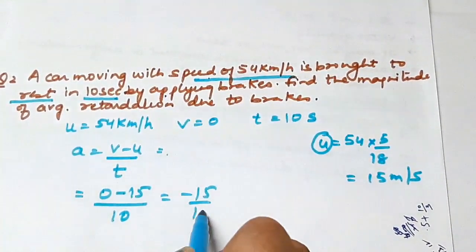Acceleration is v minus u upon t. Here we can see initial velocity is more and final velocity is zero, so acceleration will be negative because this is retardation. Because time is in seconds, we should convert to meter per second or convert time to hours so our SI unit is correct. To convert 54 km per hour to meter per second, multiply by 5 by 18. You get 15 meter per second. This is the value of u.